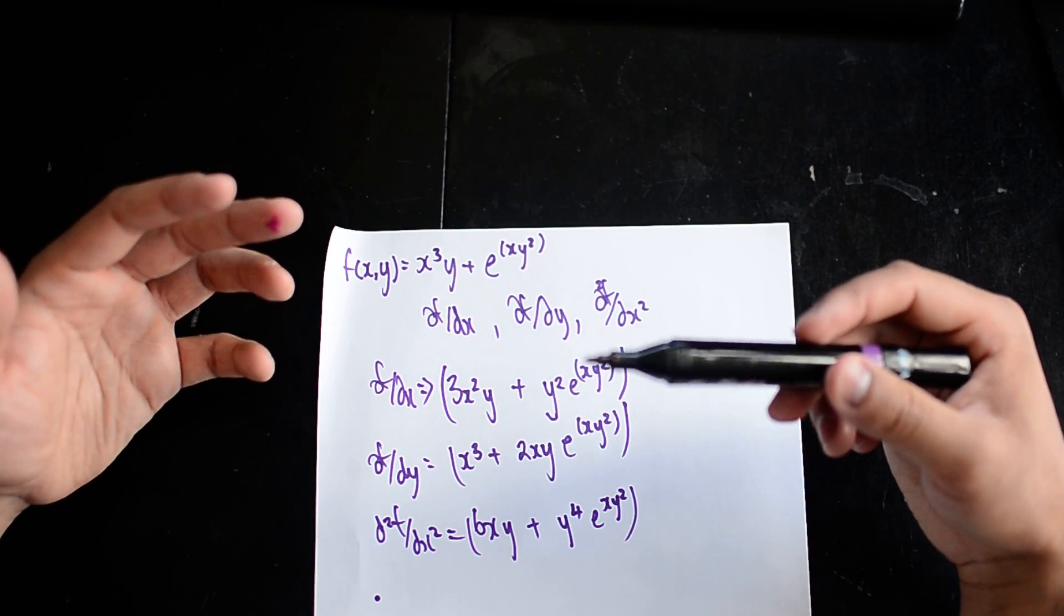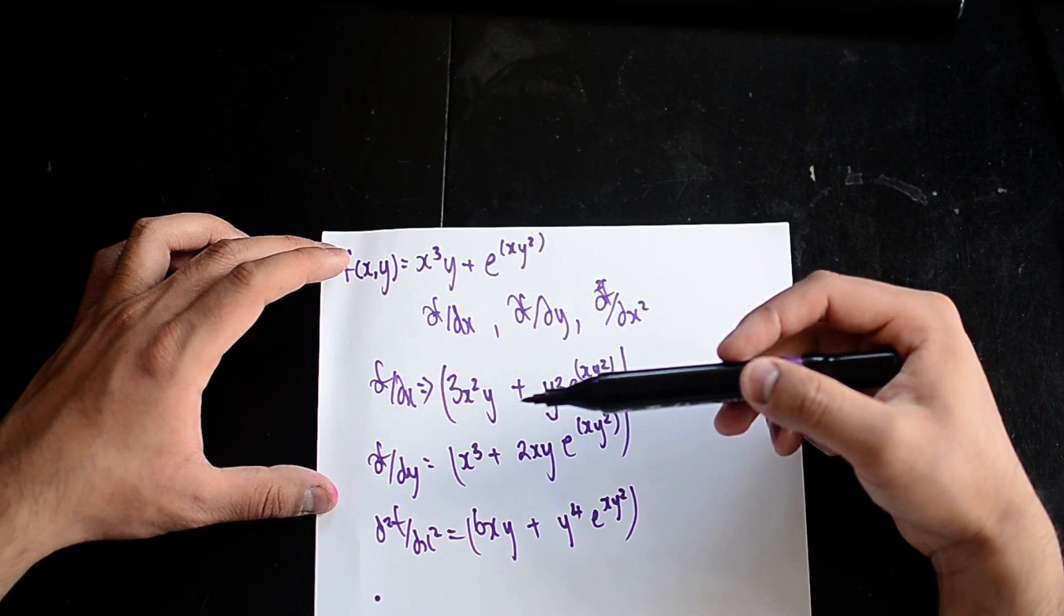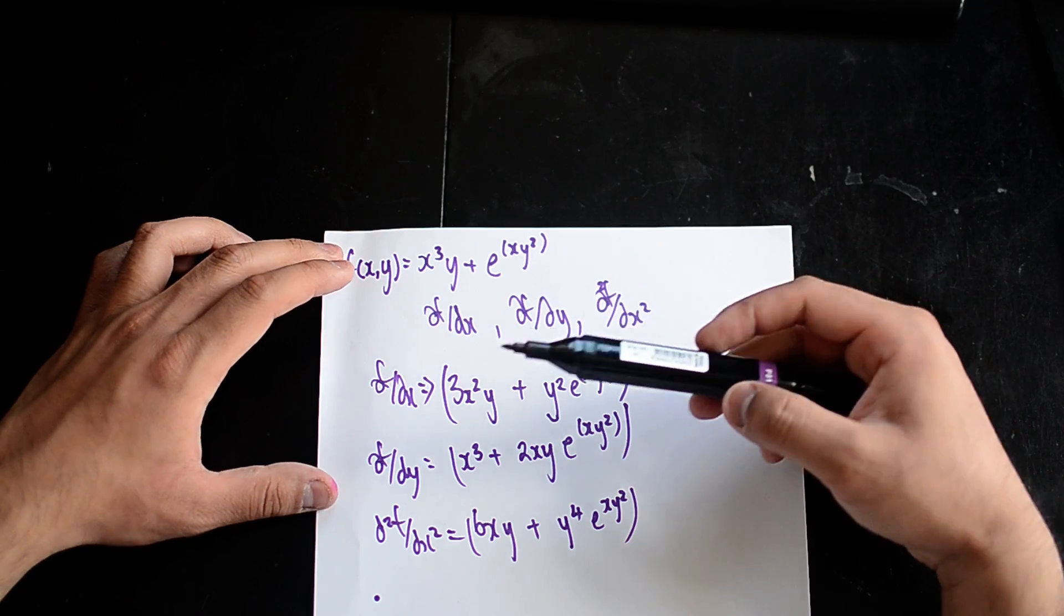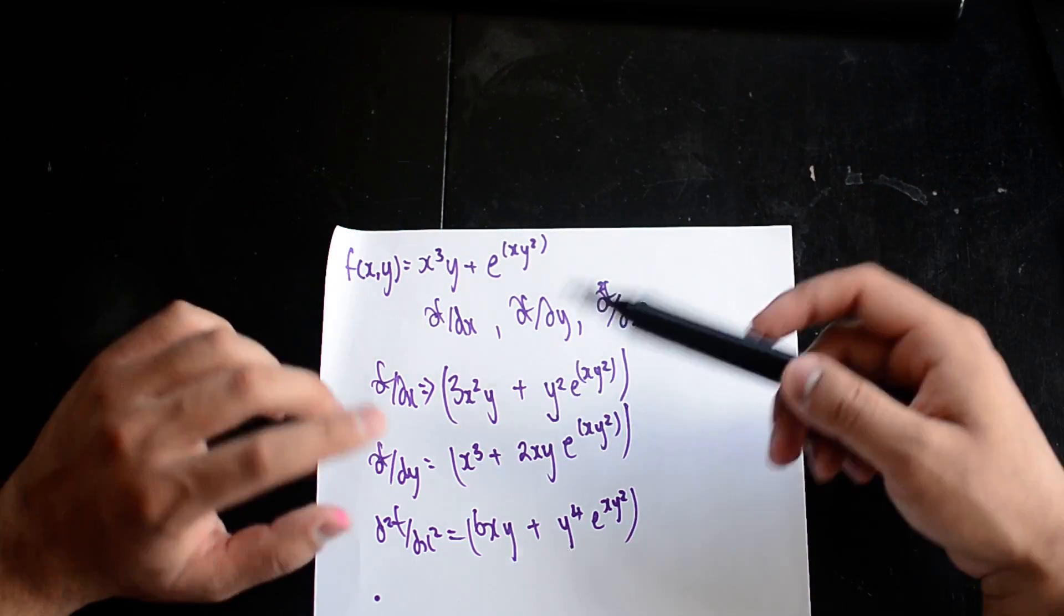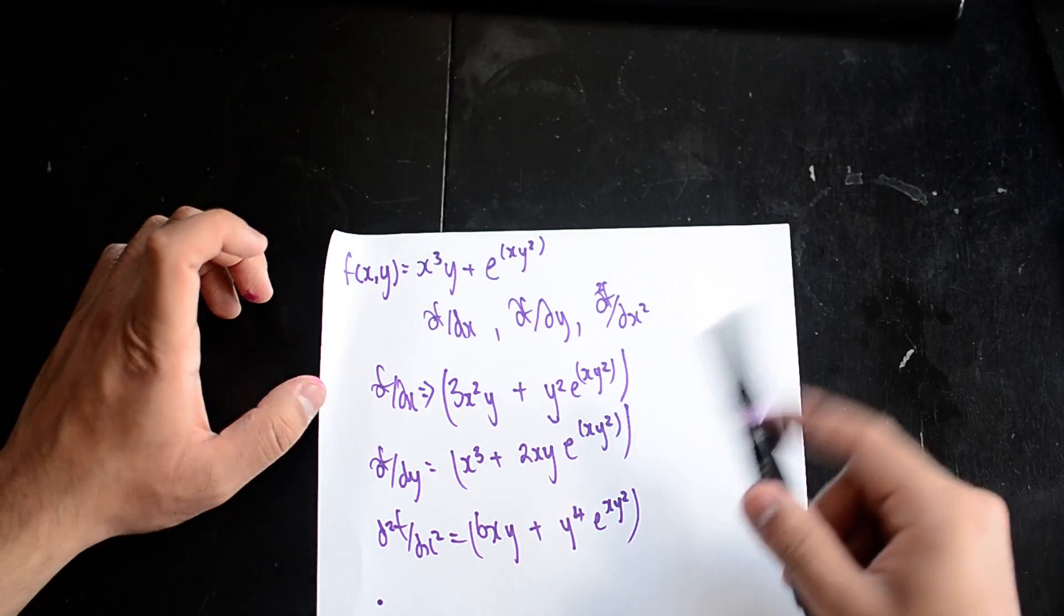But this is a very brief introduction as to how to solve these kinds of problems if you're asked to find df/dx and df/dy. This can also be used in finding the determinant of a Hessian, and we'll go into that in another video. But for now, these are the three derivatives for this problem.